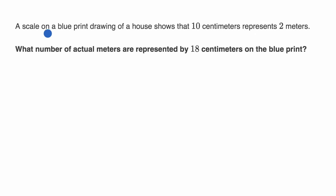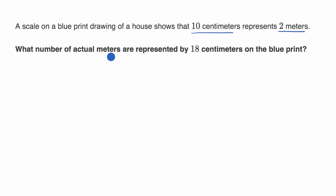We're told a scale on a blueprint drawing of a house shows that 10 centimeters represents two meters. What number of actual meters are represented by 18 centimeters on the blueprint?